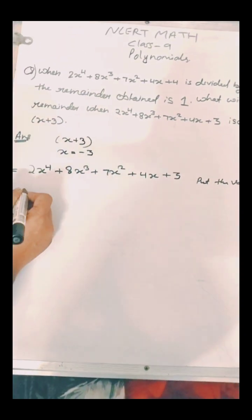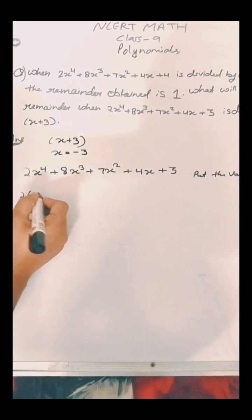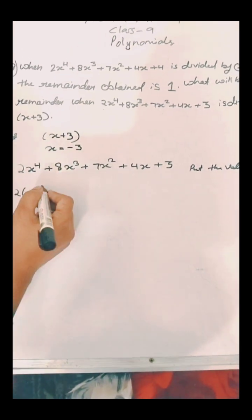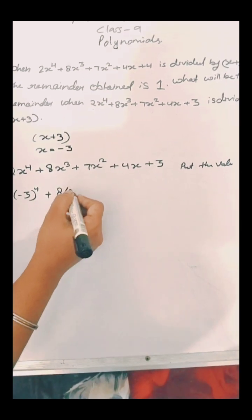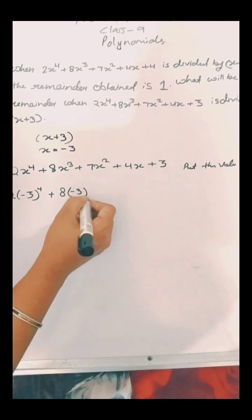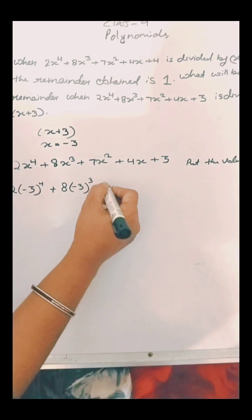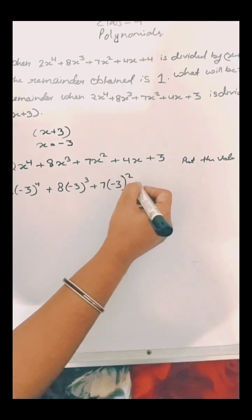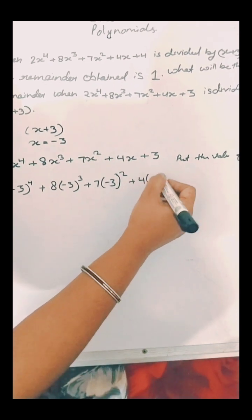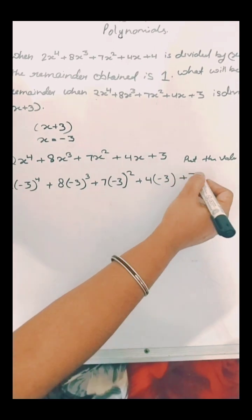So firstly we will write 2 times minus 3 raised to power 4 plus 8 times minus 3 raised to power 3 plus 7 times minus 3 raised to power 2 plus 4 multiplied by minus 3.